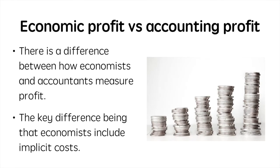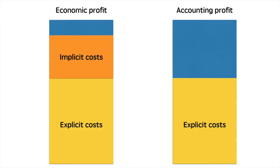Before we distinguish between normal profit and supernormal profit we need to understand how economists measure profit. If you've studied business you are probably familiar with accounting profit. Economists account for the opportunity cost of resources used in production, which leads to the consideration of implicit costs. In this visual we can see that economists take accounting profit one step further, as they account for implicit costs, so calculations of profit can vary between the economist and accounting approaches.